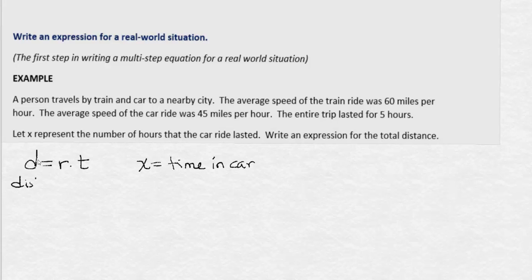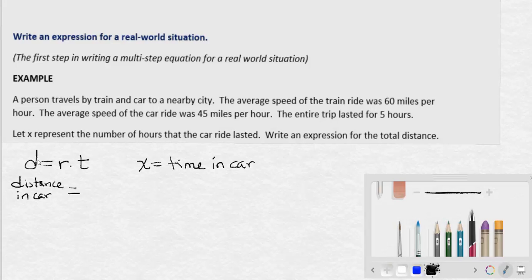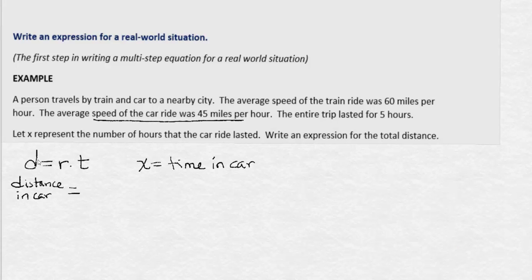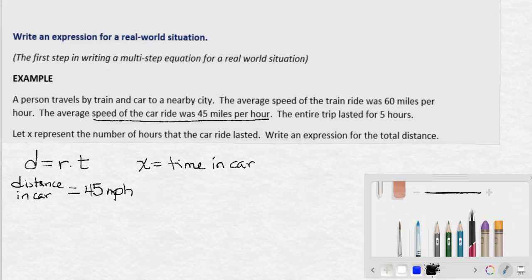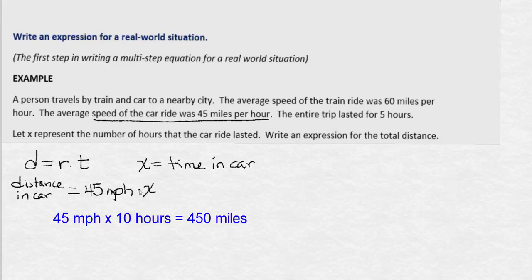The distance in the car is equal to the rate, which we're told the speed of the car ride was 45 mph, so the rate is 45. The distance in the car is 45 mph times the number of hours, or the time in the car x.